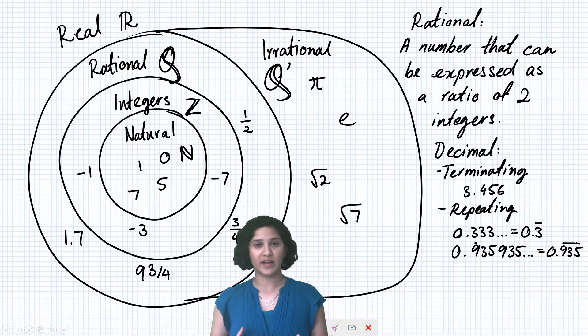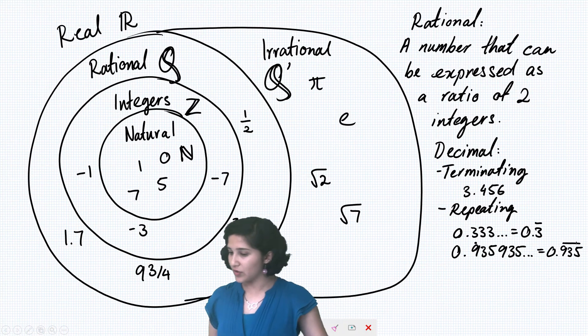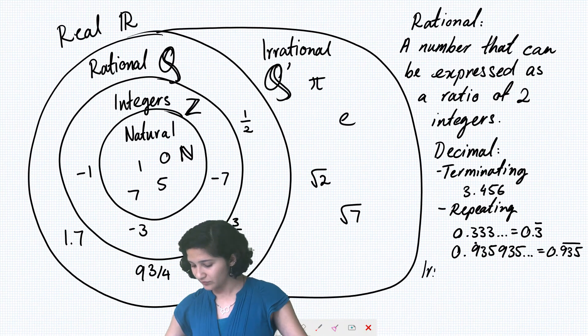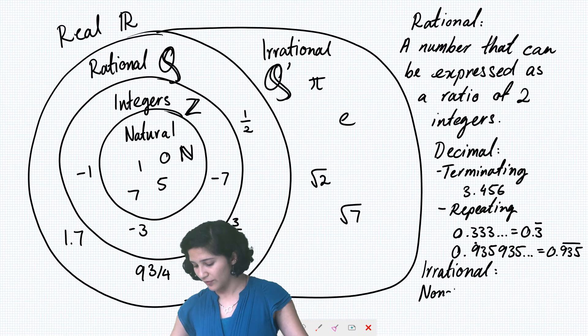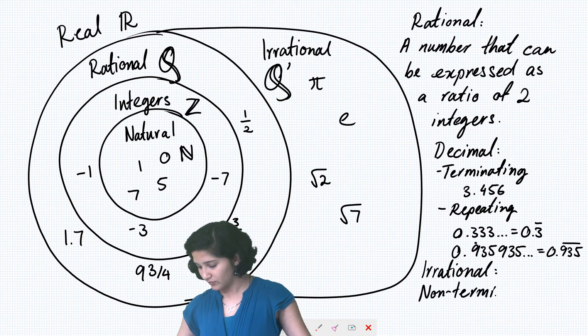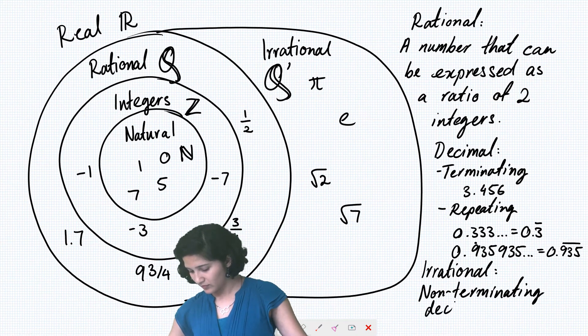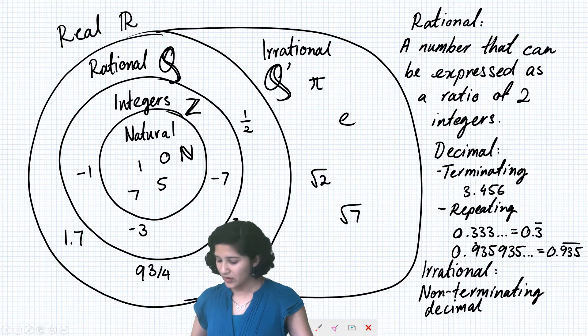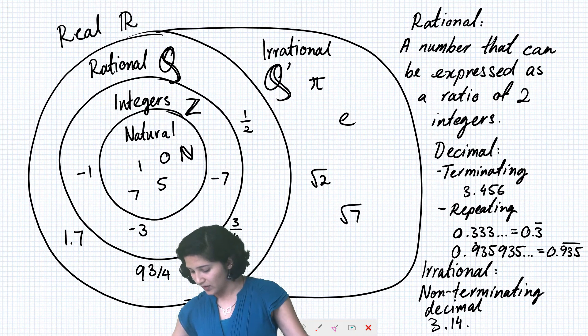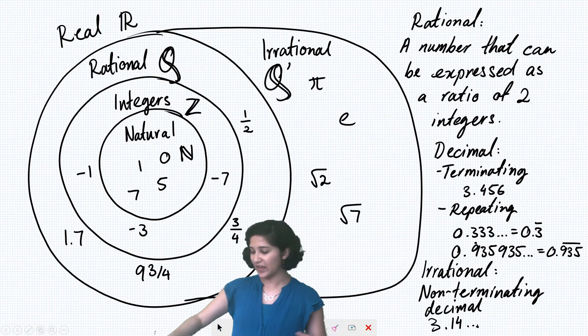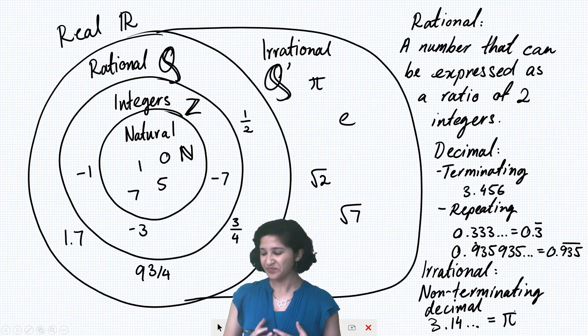So an irrational number on the other hand, if we write it as a decimal, it will just go on forever without repeating. So an irrational number will be non-terminating, we'll have a non-terminating decimal. So if we write it out, it will be something like 3.14 and keep going on forever without repeating. So that's why we give these kinds of numbers special symbols like pi.